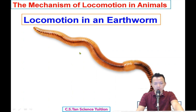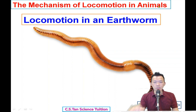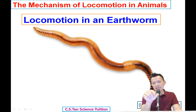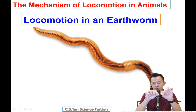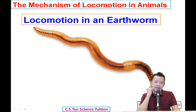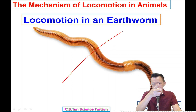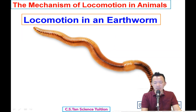So we start now. The first title we cover today is the mechanism of locomotion in animals — how different animals move their bodies. Our first animal will be the earthworm. Sometimes I catch an earthworm and pull it until it breaks into two. You can see the body structure when it is cut.